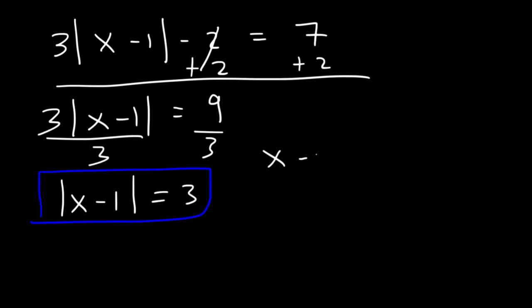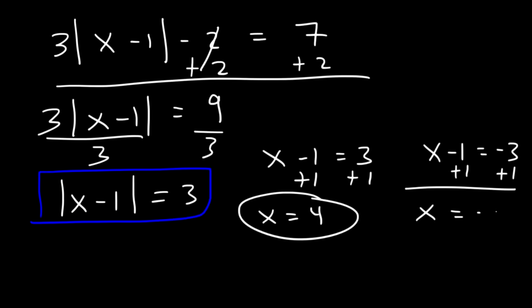So the first one is going to be x minus 1 is equal to 3. And the second, x minus 1 is equal to negative 3. So if we add 1, x is equal to 4. And if we add 1 to the other one, negative 3 plus 1 is negative 2. So this is the solution.